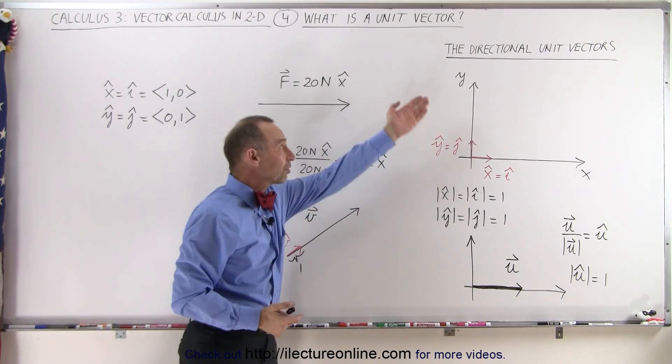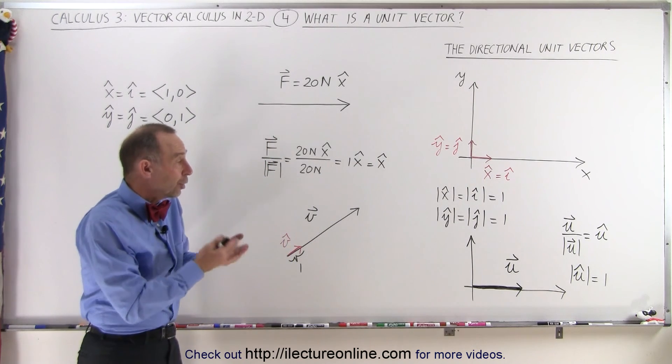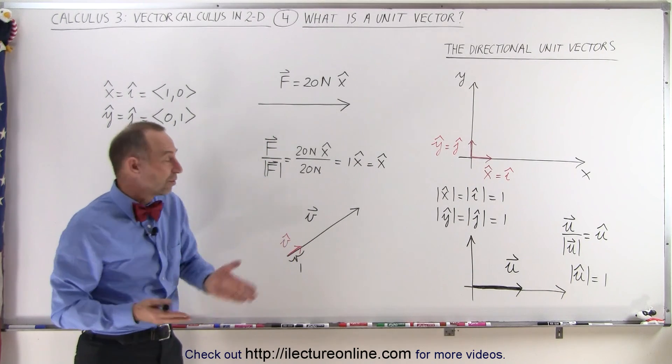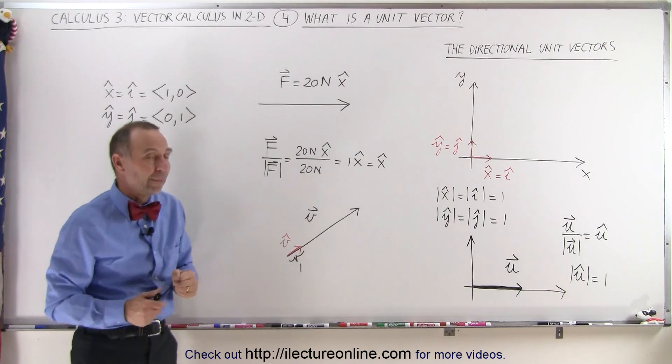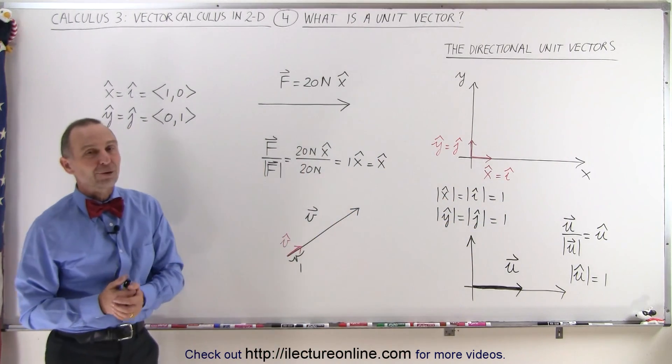Sometimes we call them directional unit vectors when they point the x, y, or z direction, or they're simply a unit vector pointing in the same direction as the vector from which they were derived from, by taking the vector and dividing it by its magnitude.